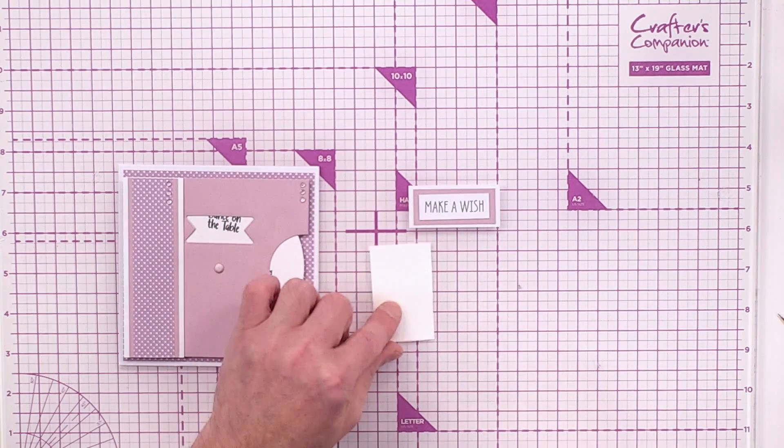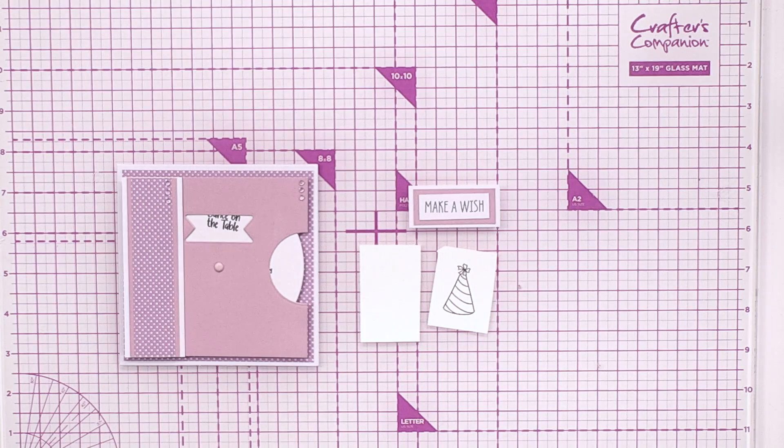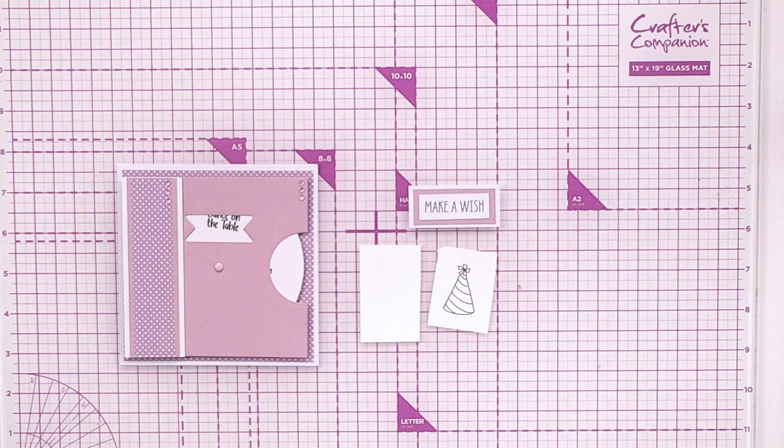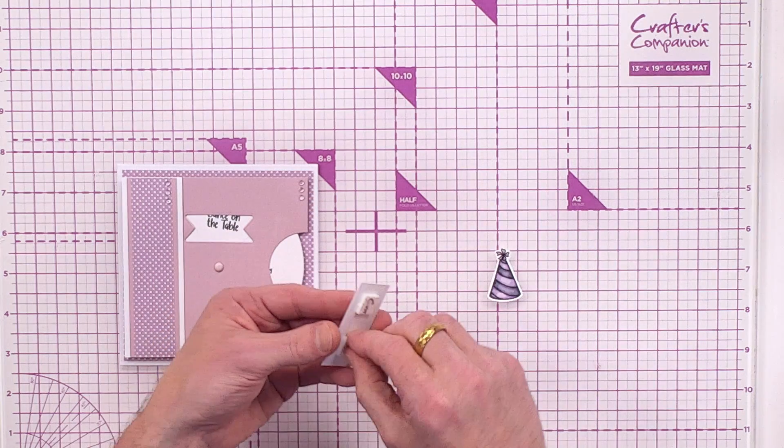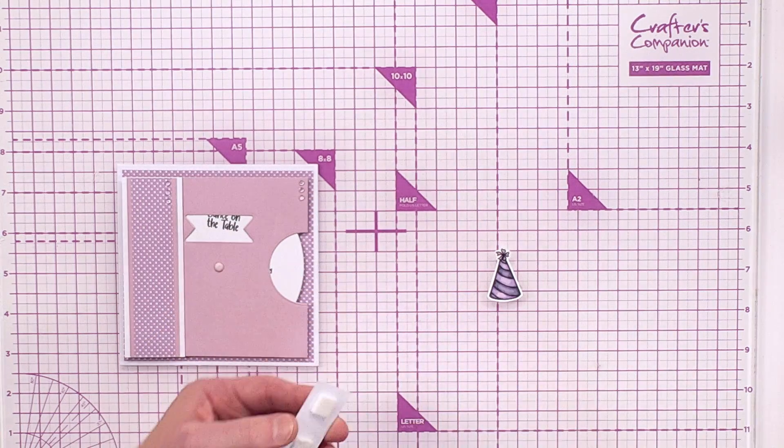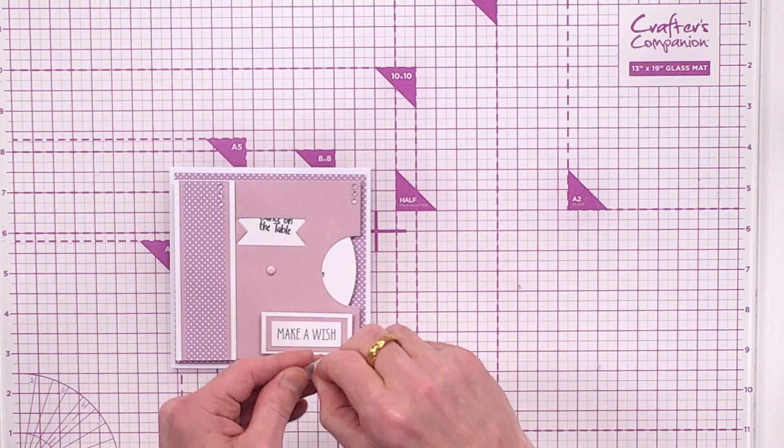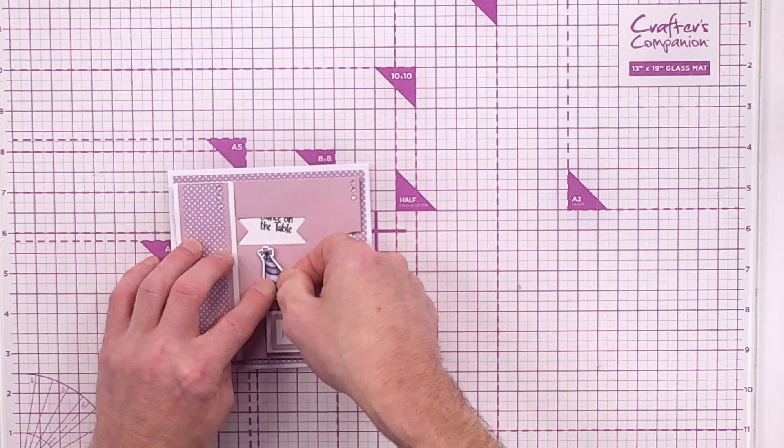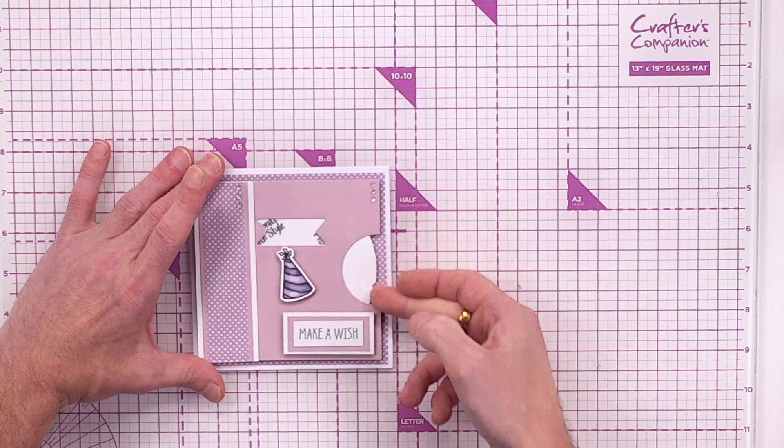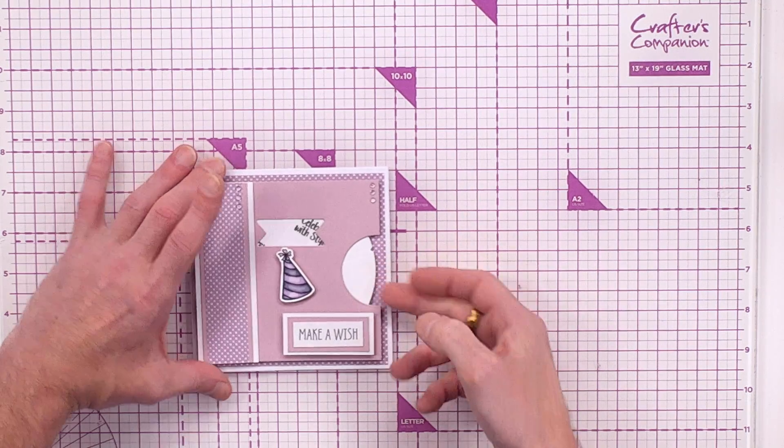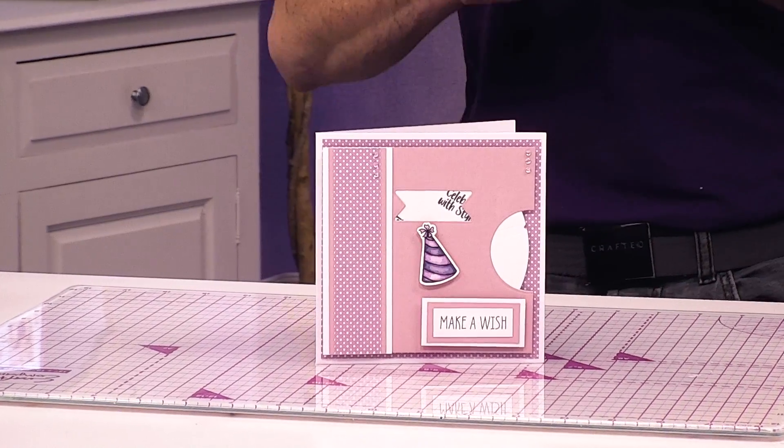And then I've taken a bit of Neenah cardstock or you could use your multi-purpose card, stamped out that little party hat, which of course you have got included within your stamp set as well as the cake and champagne glasses. Using my tri-blends, I've colored these ones in and we can simply finish this one off now. I'm going to take my foam pads off the back here. I'm going to pop that to the bottom and this is where I said don't worry about your little brad. That is going to cover the brad. We have got Make-A-Wish, we've got Eat Cake, Dance on the Tables, Drink Prosecco, Celebrate in Style.